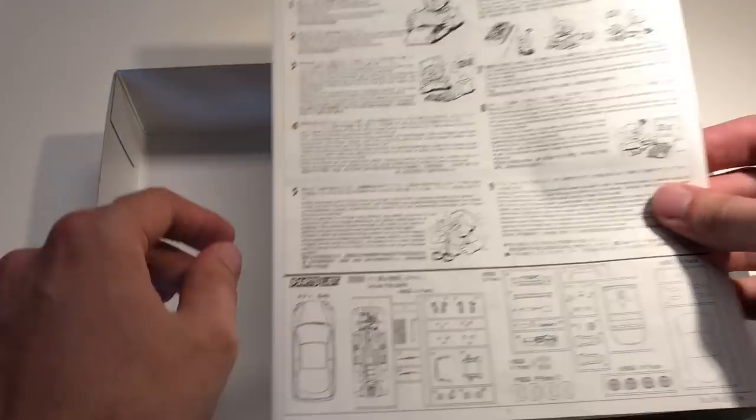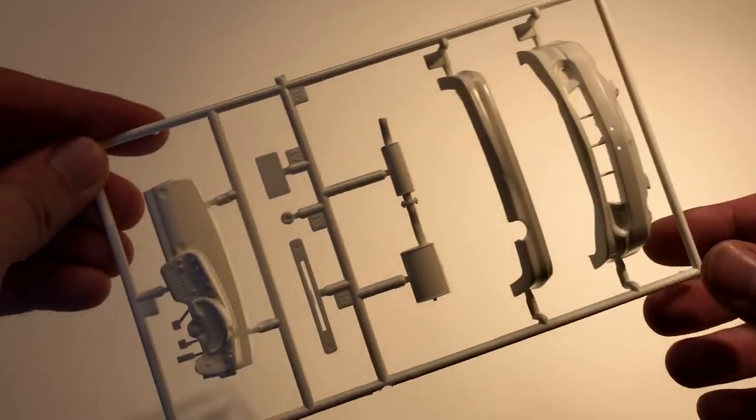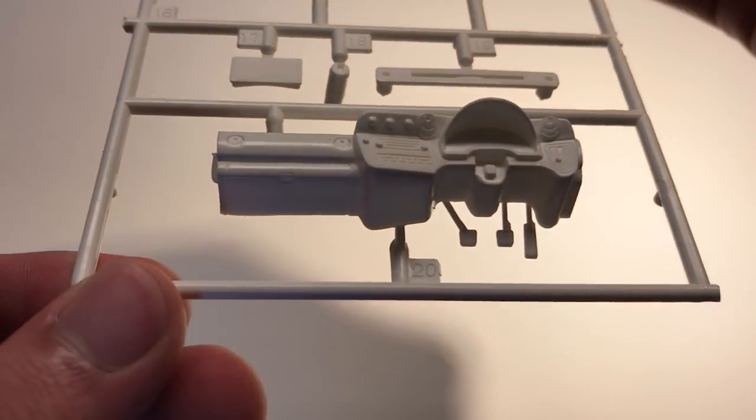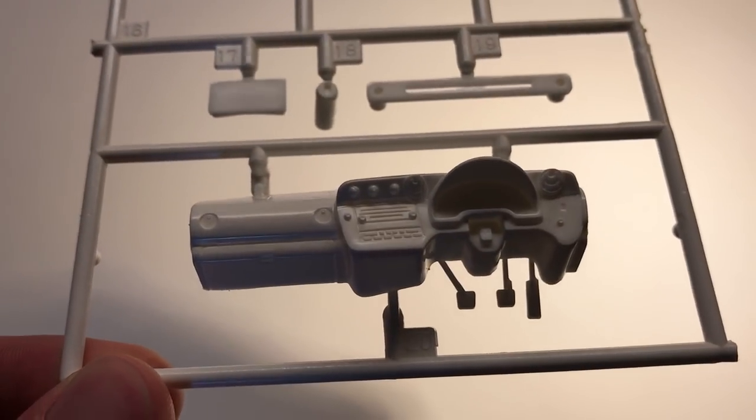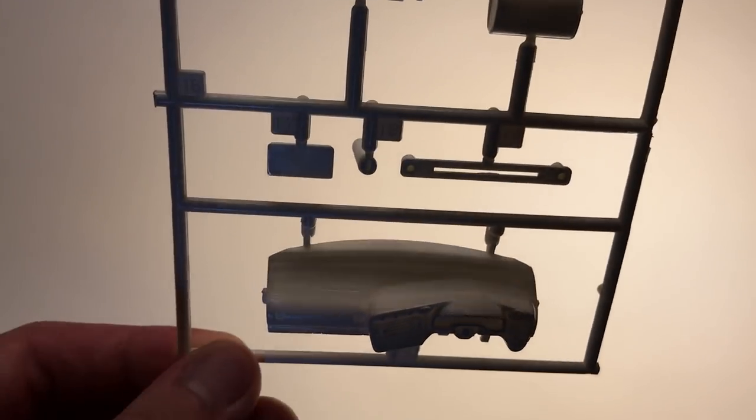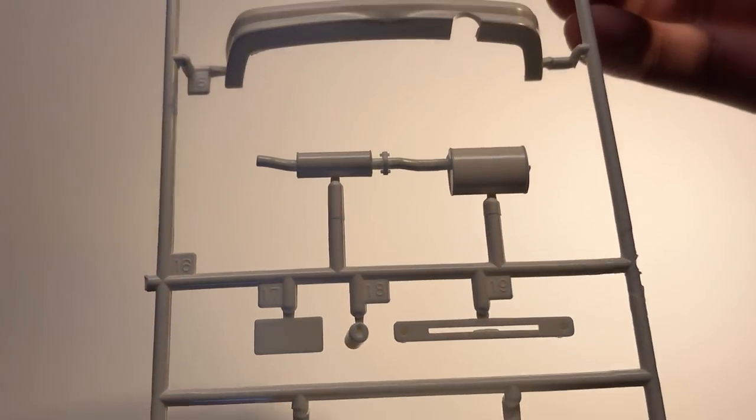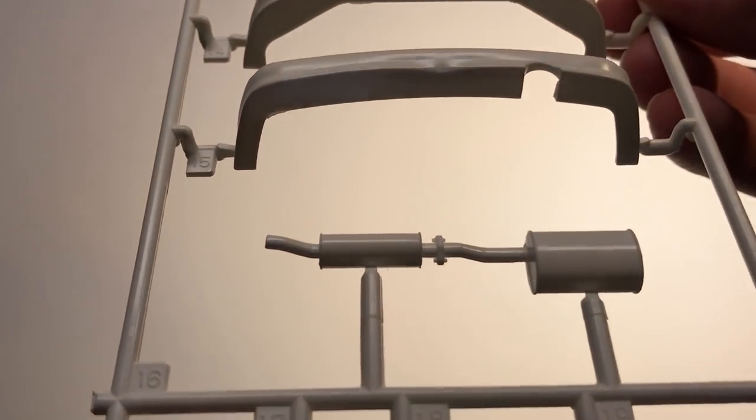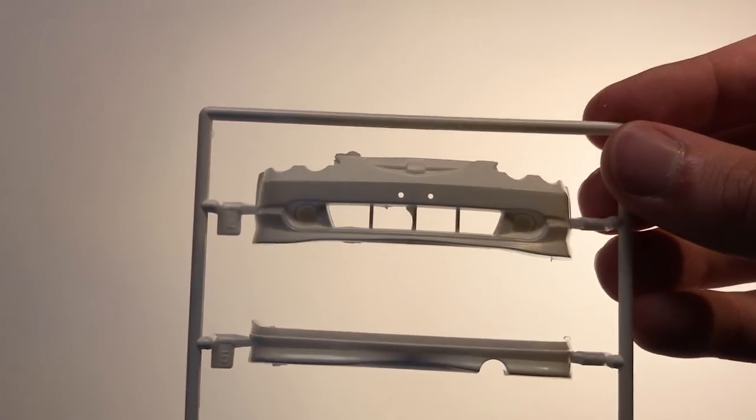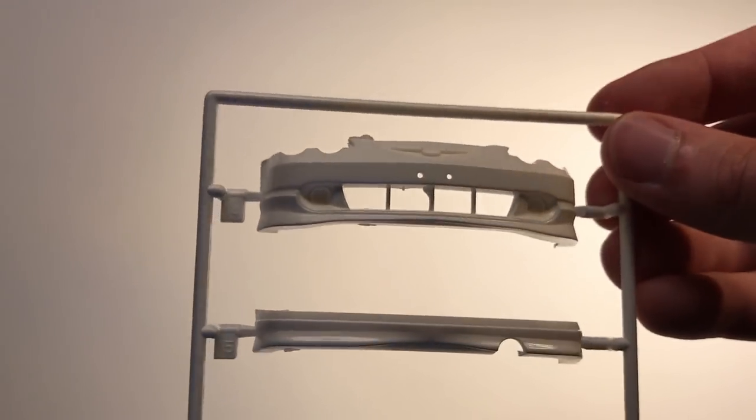So as usual with these Fujimi kits, the body looks pretty good and the rest of the details on the inside and chassis are not really that great. The dashboard is pretty nice, has a lot of the details for the vents, the radio and some other climate control stuff in there and the general shape seems to be right as well. Same goes for some of the exhaust parts and other chassis pieces including the lip for the rear bumper and also the main front bumper itself.